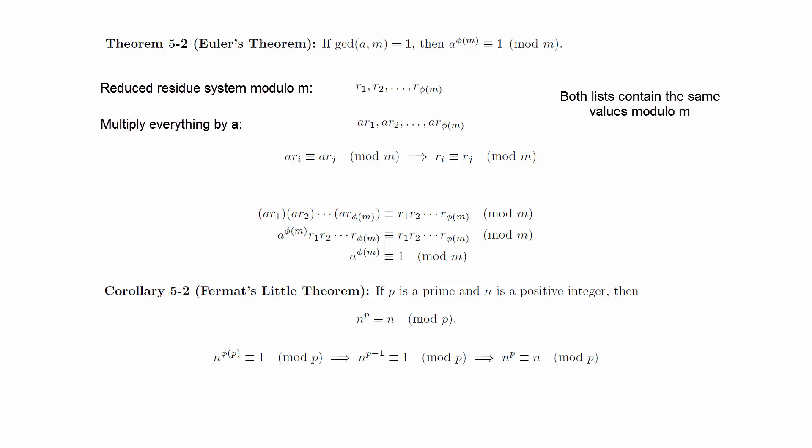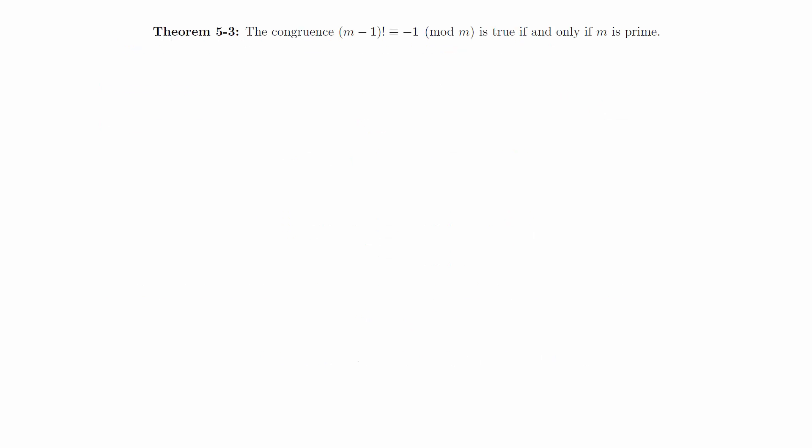We will now move on to proving Wilson's Theorem. Again, we'll get that result as a corollary of a more general theorem. Wilson's Theorem is actually just the backwards implication of this theorem. Theorem: The congruence m minus 1 factorial is congruent to negative 1 mod m is true if and only if m is prime.